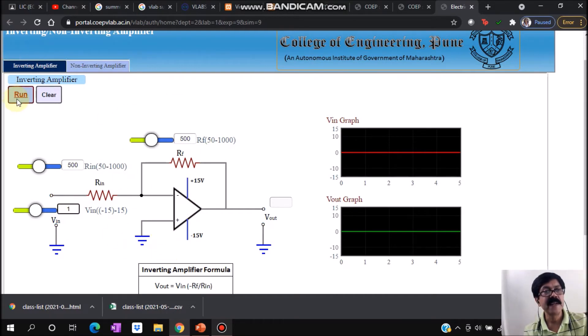Output I am getting as -1 volt, as we know the closed loop gain is -Rf upon R1, which gives us -1 value. When it is multiplied by 1, we get -1. And see, they are out of phase. Input and output are out of phase.